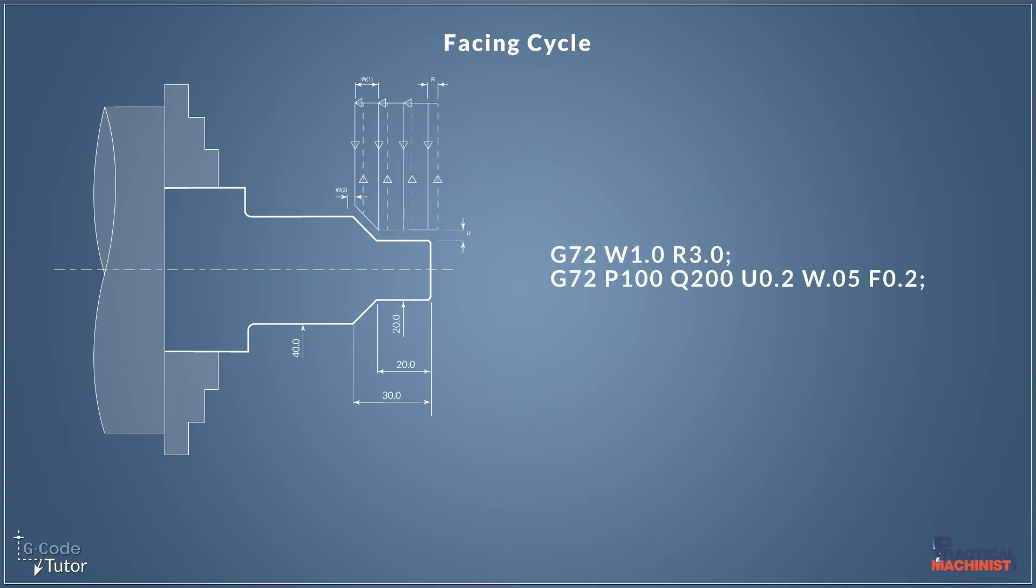The G72 is a facing cycle and it works the same way as our G71. The only difference is we're indexing in along the Z axis, so we're taking a depth of cut on Z, but we're using the X axis to actually remove the material. The tool will be cutting along the X axis by indexing along the Z to take a depth of cut. The G72 is great for making short spigots. I often use it for making false centers when machining a false center on the end of the part.